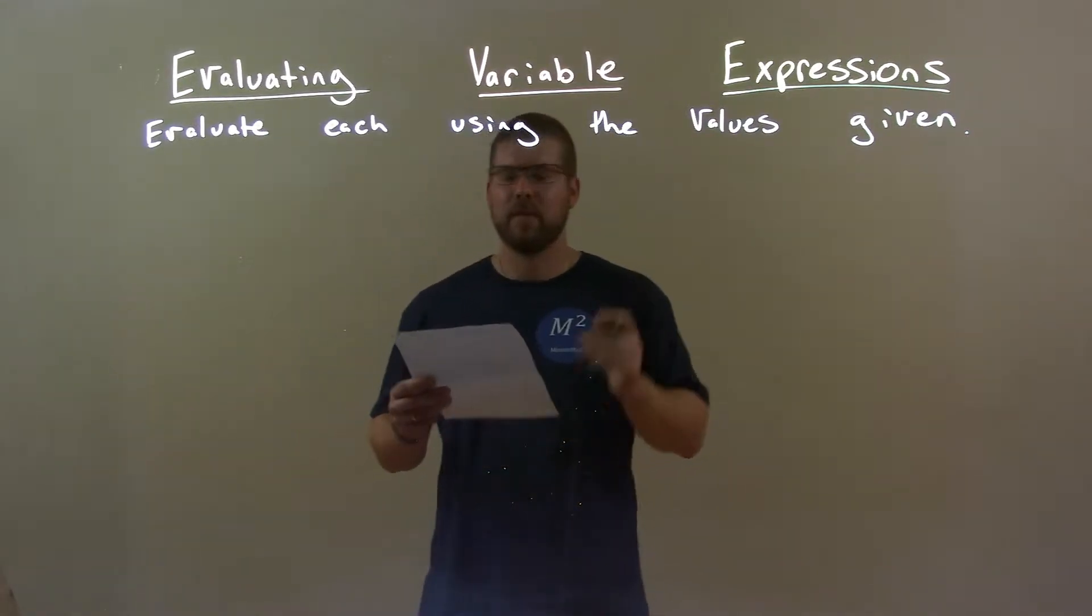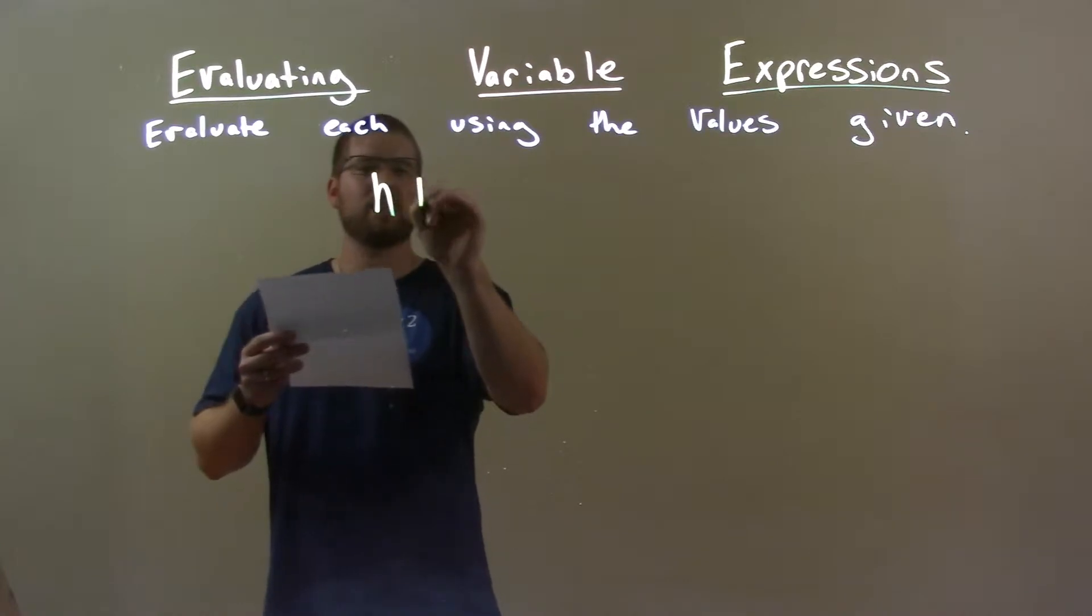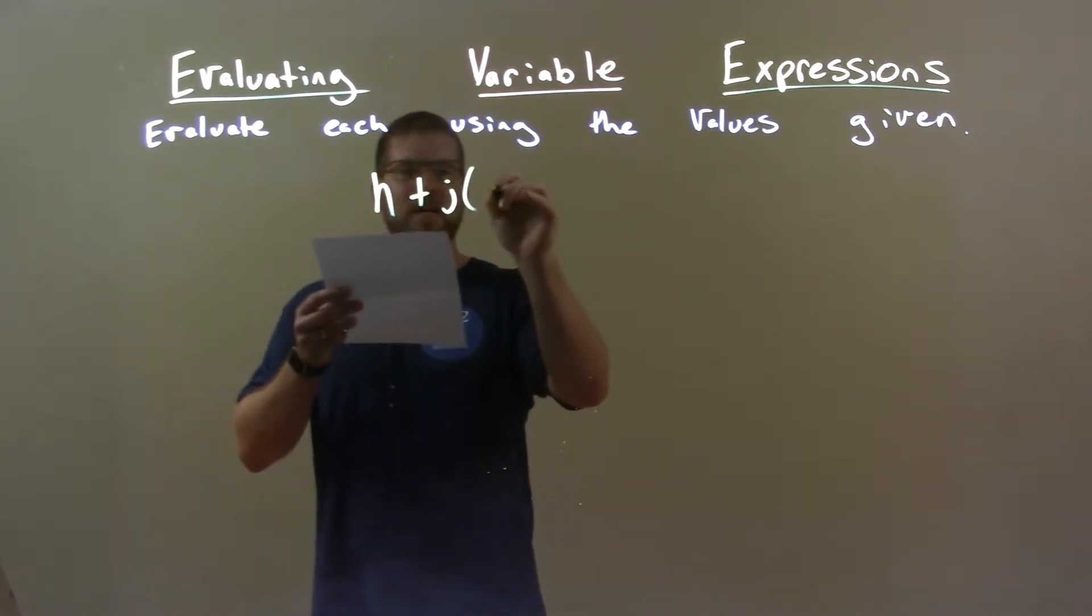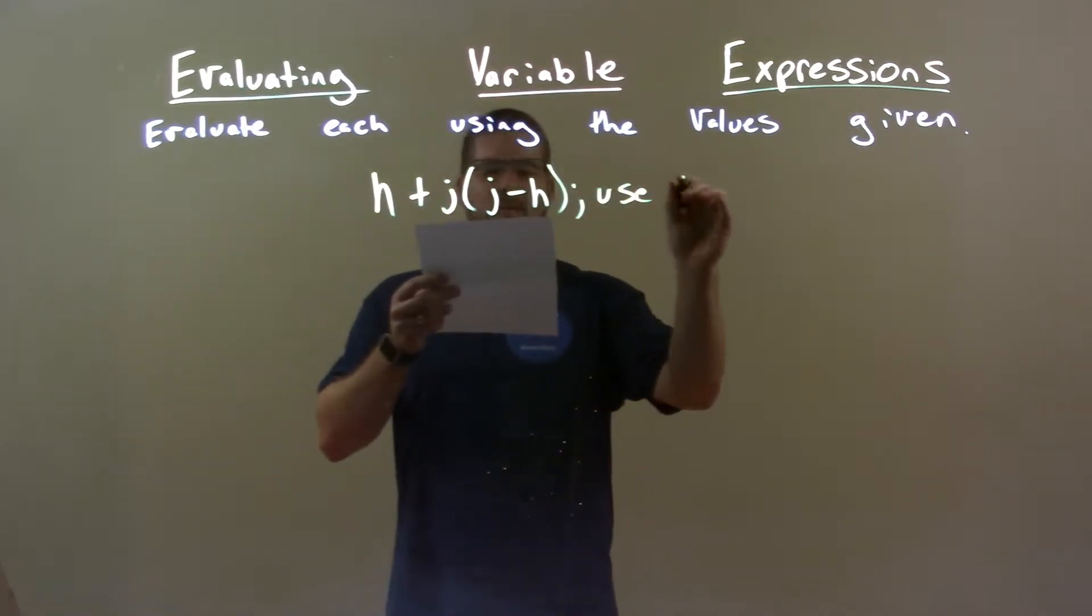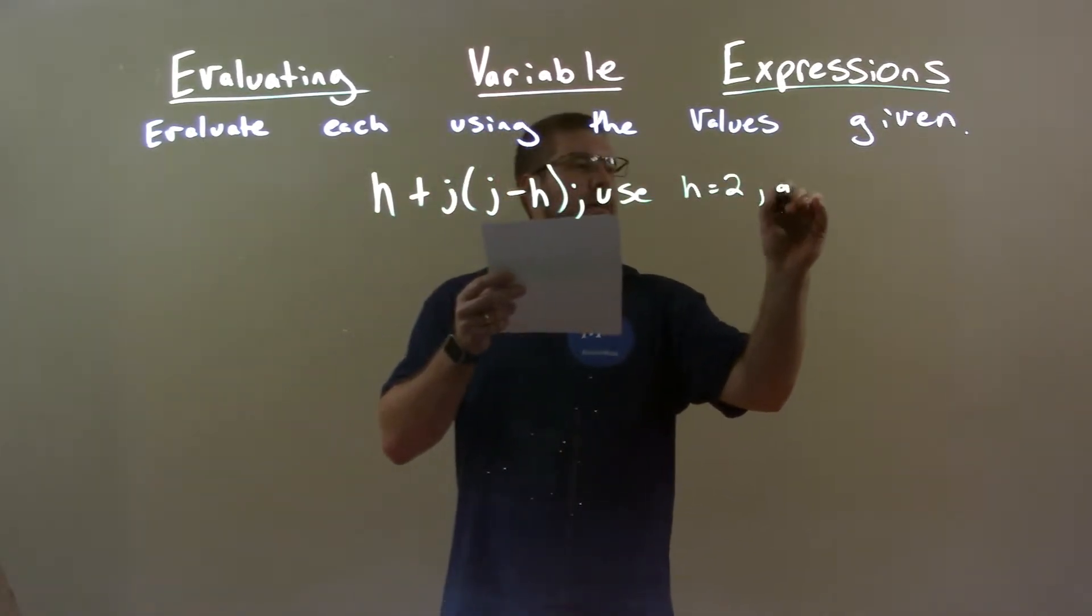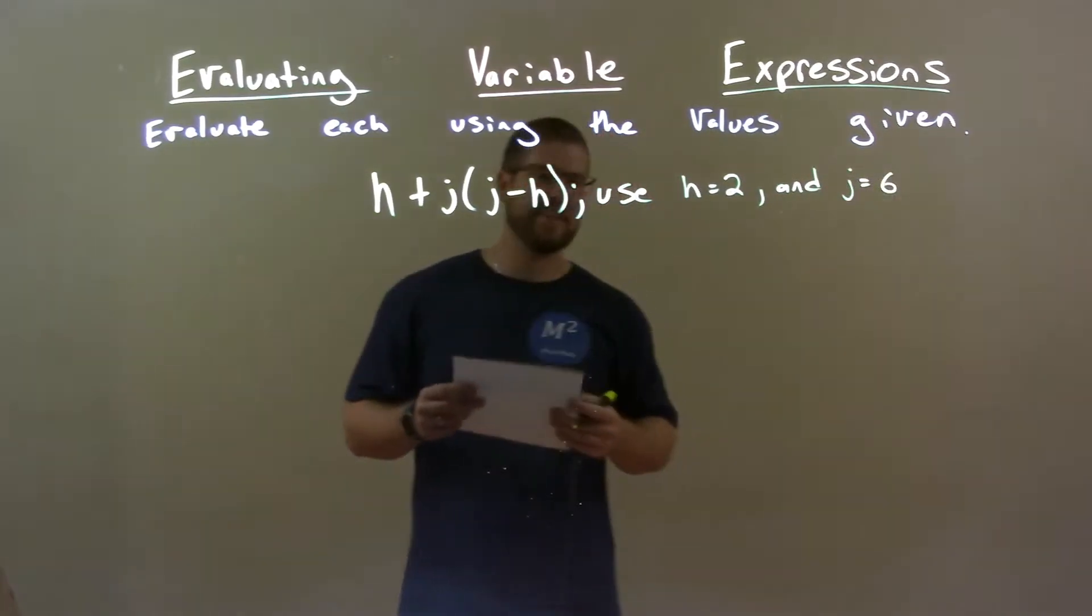So if I was given this expression, H plus J times J minus H, and we got to use H to be 2 and J to be 6.